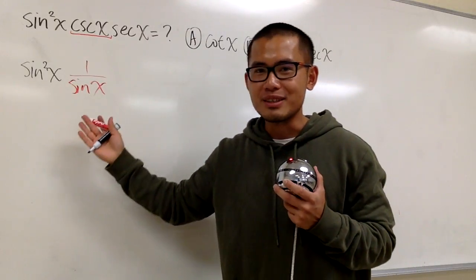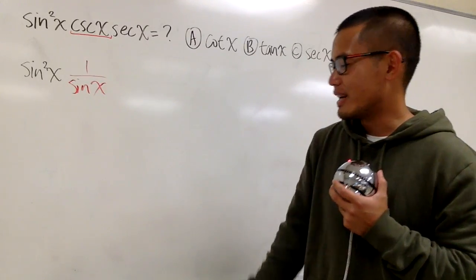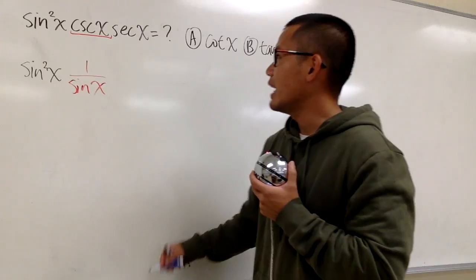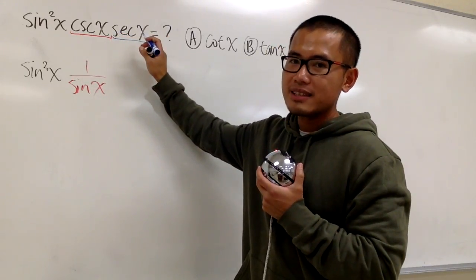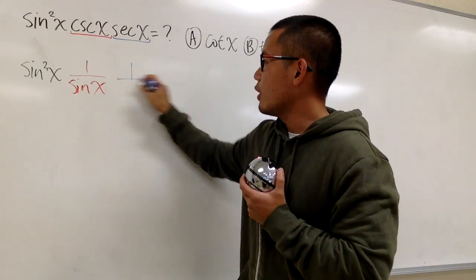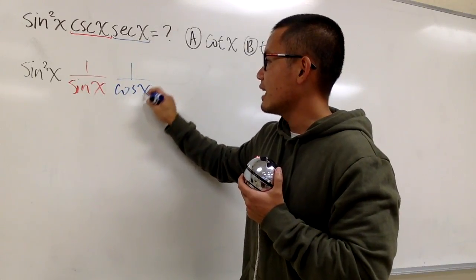And once again, we have to know these things really well. Next, we multiply by secant x. And for secant x, this is the same as 1 over cosine x.